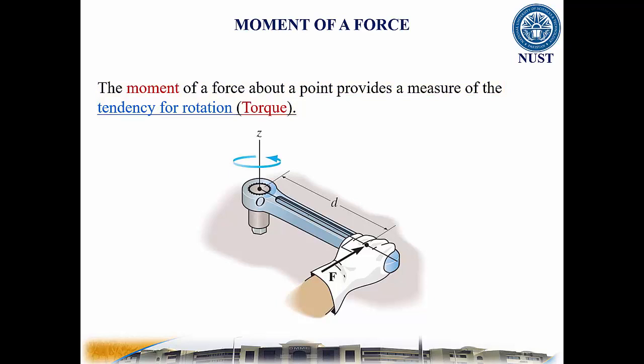For example, consider a wrench used to unscrew a bolt. If a force is applied to the handle of the wrench, it will tend to turn the bolt about point O or the Z axis. The magnitude of the moment is directly proportional to the magnitude of the force and the perpendicular distance or moment arm.